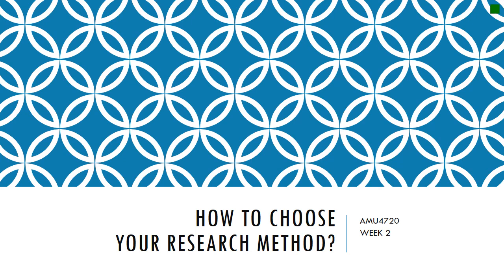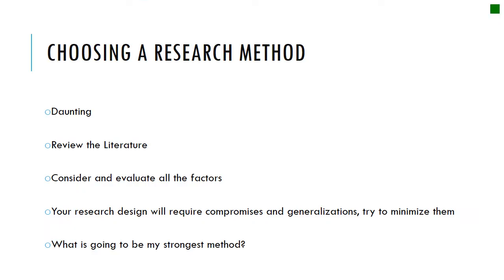The next thing we're going to talk about is how do we choose your research method. Choosing a research method can be an extremely daunting task, but the first thing we have to do is make sure that we review the literature. We're not going to choose our research method before we've reviewed the literature and before we've thought about all the extenuating circumstances that can happen as we're conducting our research project.